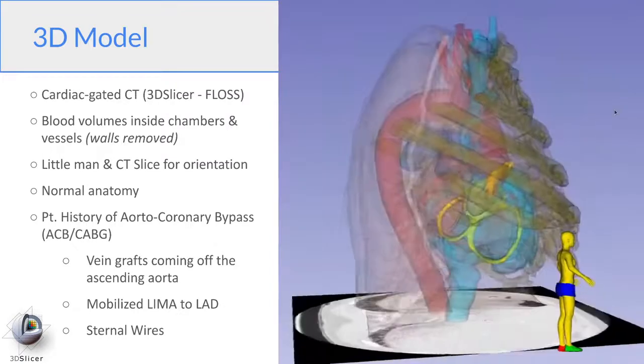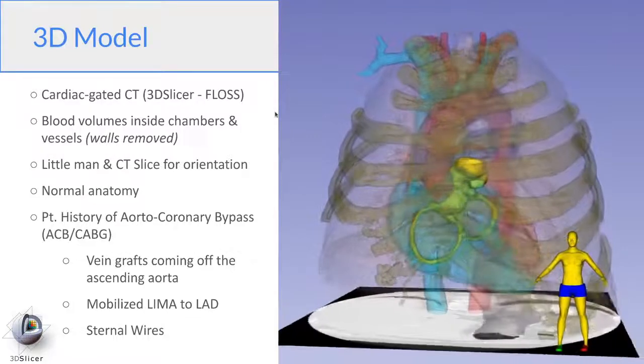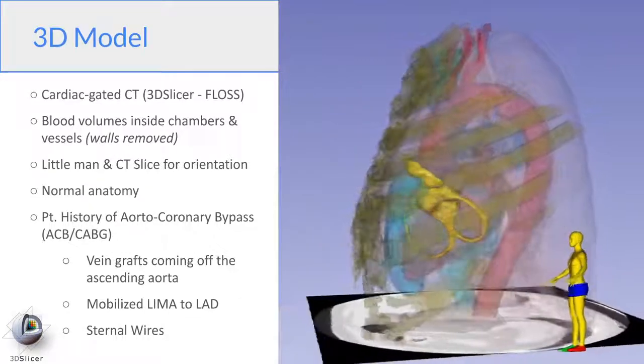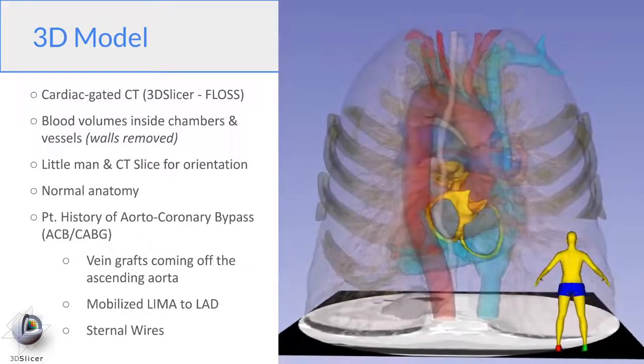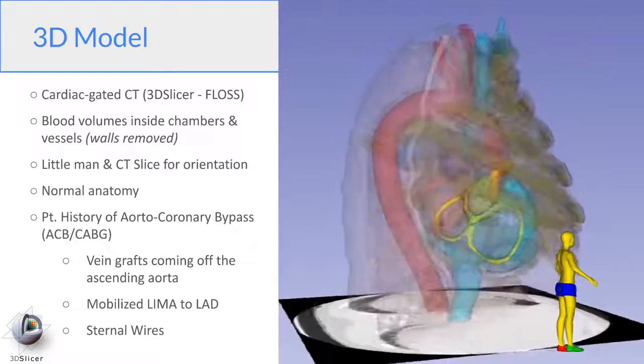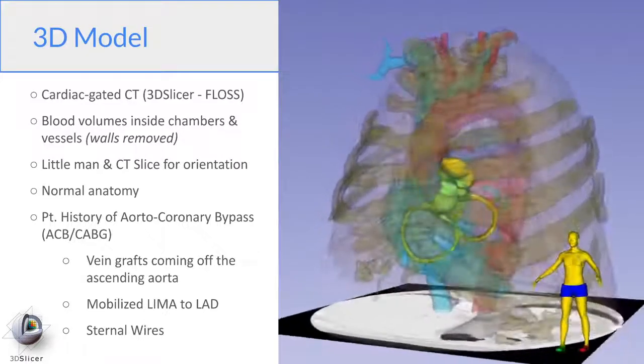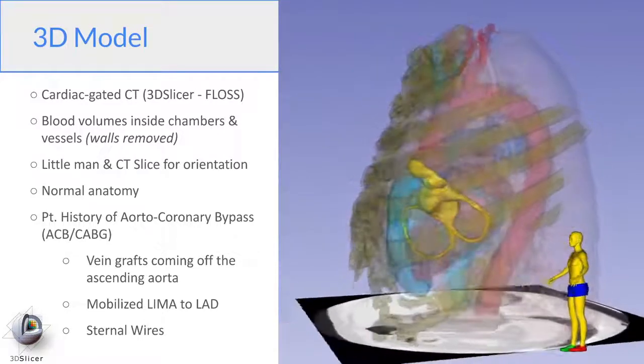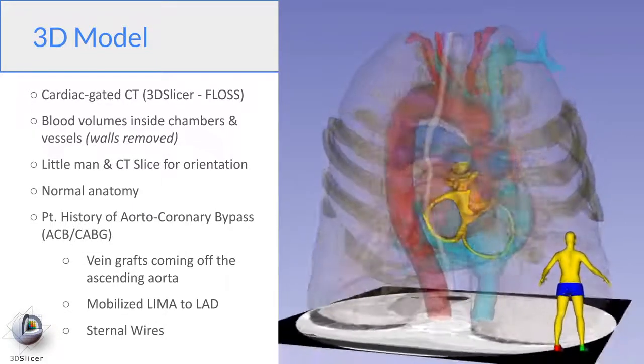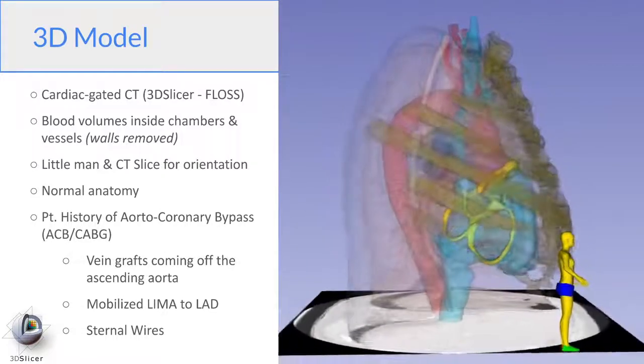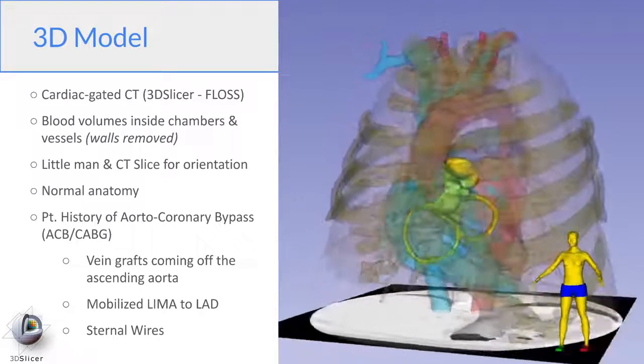What we're showing here are blood volumes of the chambers. So the walls of the vessels and all the myocardium has been removed so that you can more clearly see all the connections inside the heart. The small man on the right will show you the orientation of any of the images. This heart has generally normal anatomy, but this patient did have a previous heart surgery for aortocoronary bypass grafting or CABG. And if you look closely, you can actually see some of the saphenous vein grafts coming off the ascending aorta and part of the mobilized LIMA that was grafted to his LAD. He also has sternal wires that I'll make visible in some of the views that will help us locate where the sternum is more easily.